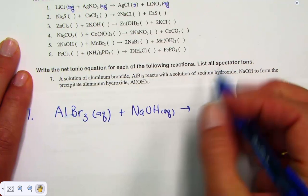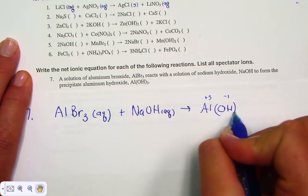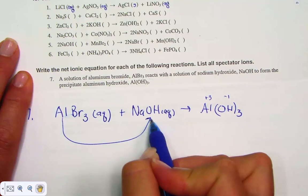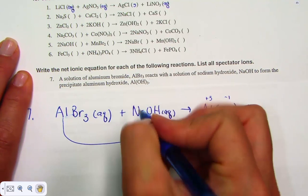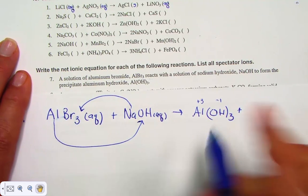Al is a plus three, OH is a minus one, so that's where they're getting Al(OH)3. Aluminum will hook to hydroxide. Even though it's not stated, we understand there's a second product: Sodium goes to bromide.